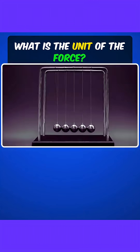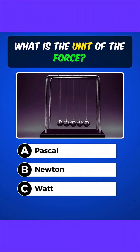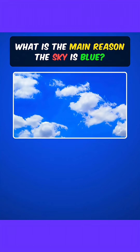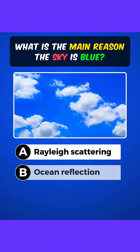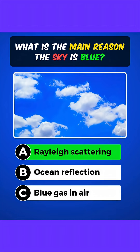What is the unit of force? Answer B: Newton. What is the main reason the sky is blue? Answer A: Rayleigh scattering.